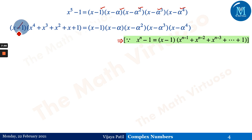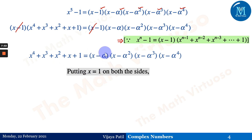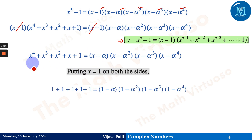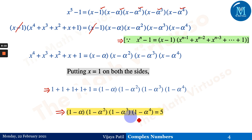Now substituting x = 1 from both sides, we get 1 + 1 + 1 + 1 + 1 = 5 on the left, and (1 − α)(1 − α²)(1 − α³)(1 − α⁴) on the right. Hence (1 − α)(1 − α²)(1 − α³)(1 − α⁴) = 5, which is the identity we wanted to prove.